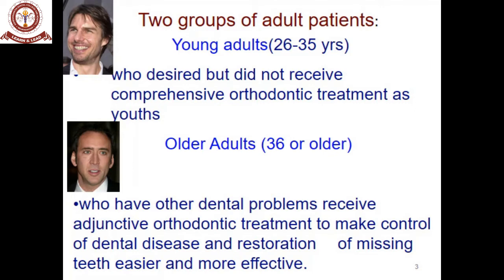You can categorize the adult patient into two groups. One is the young adult of the age group 26 to 35 years, and the other one is the older adult of 36 or older. Young adults fall into the group who decided to get treatment at an early age but didn't receive treatment for reasons such as economics. Older adults have other dental problems and are referred to the orthodontist for adjunctive orthodontic treatment to control dental disease and facilitate restoration of missing teeth.